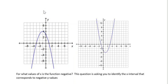When looking at a parabola, we want to be able to determine where the function is negative, and we do that based on intervals of the x-axis. So we can determine where the function is negative and where the function is positive. When we talk about the function being positive versus negative, we're just talking about the sign of the y values.